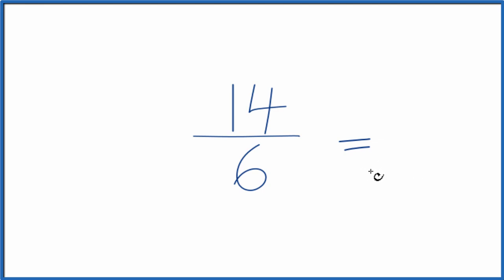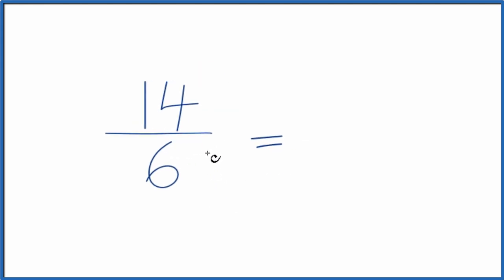To do that we need to find a common factor, something that goes into 14 and 6 evenly. So when I look at these we have two even numbers. Why don't we divide the numerator by 2 and the denominator by 2. So 2 would be our greatest common factor.